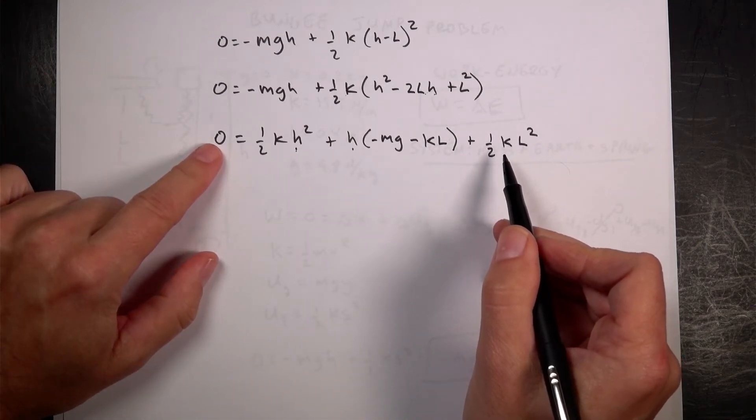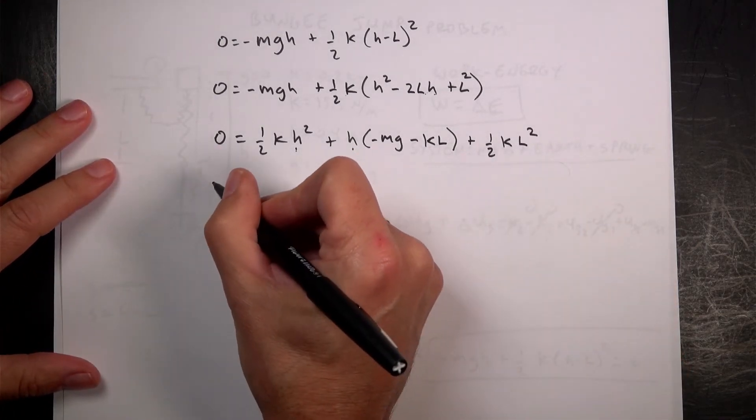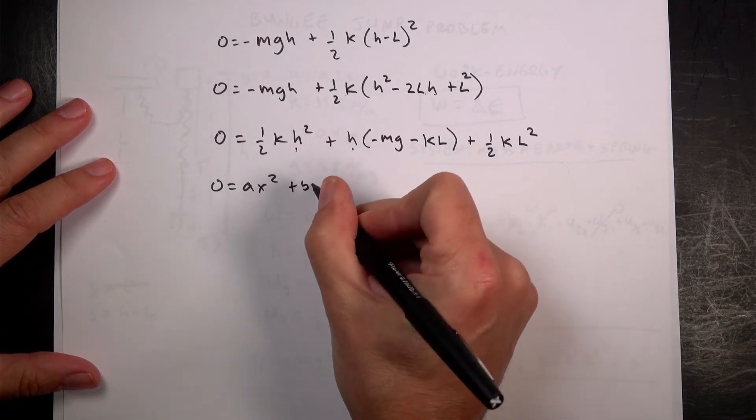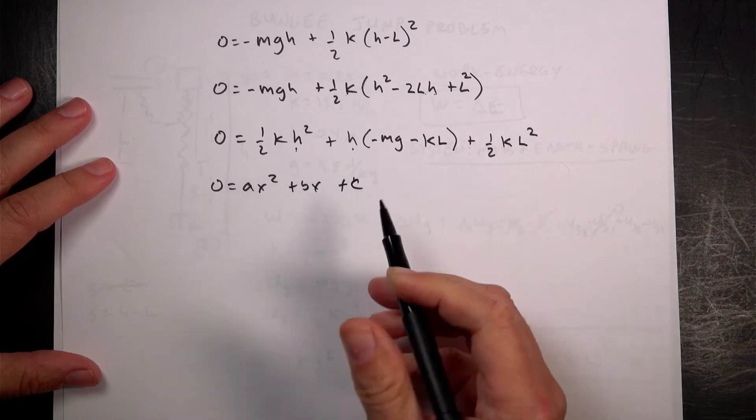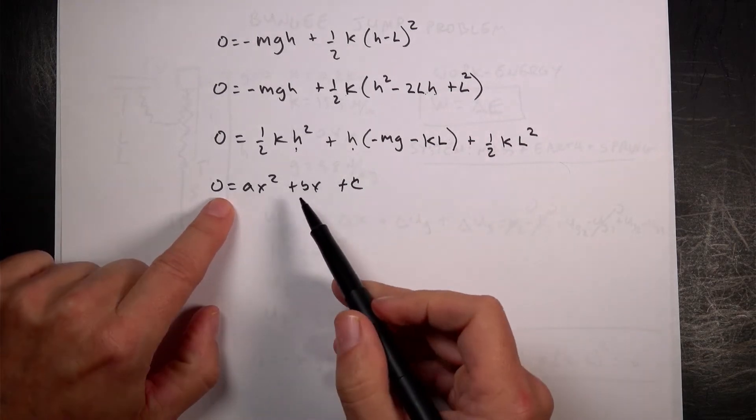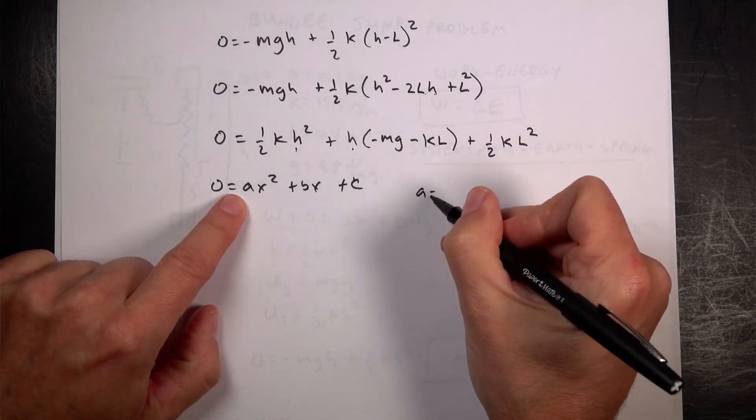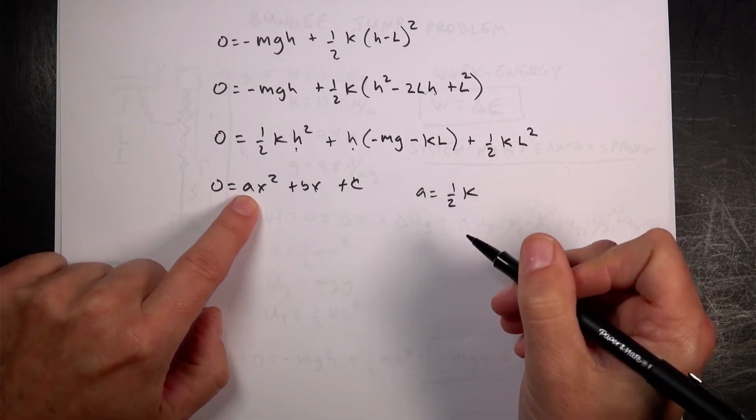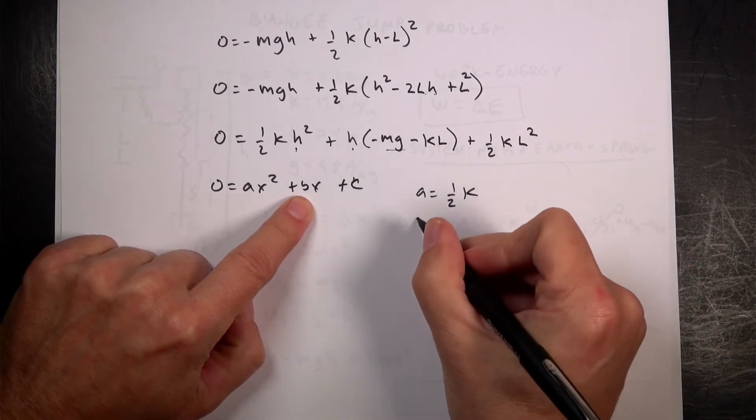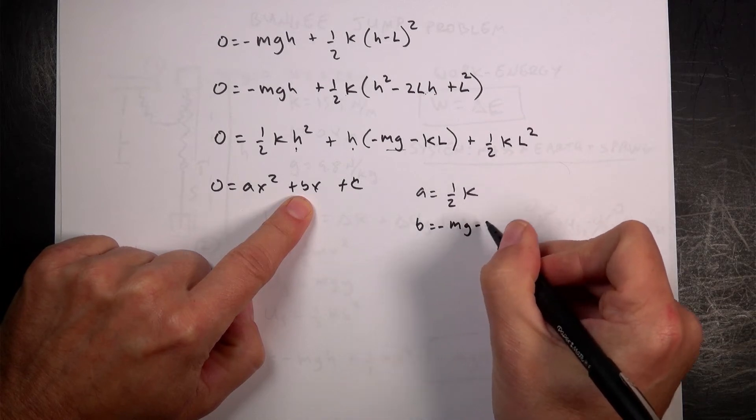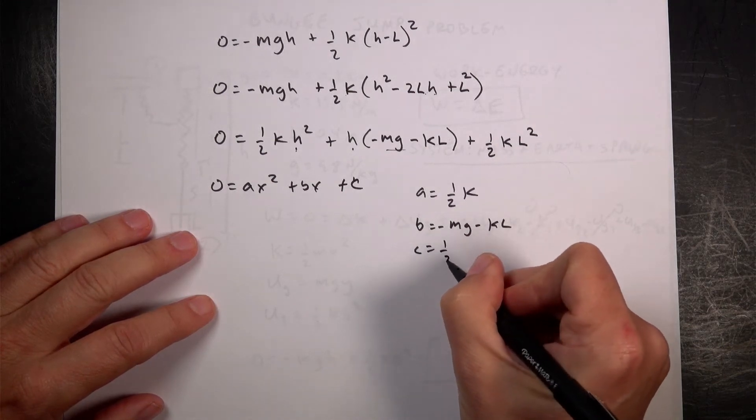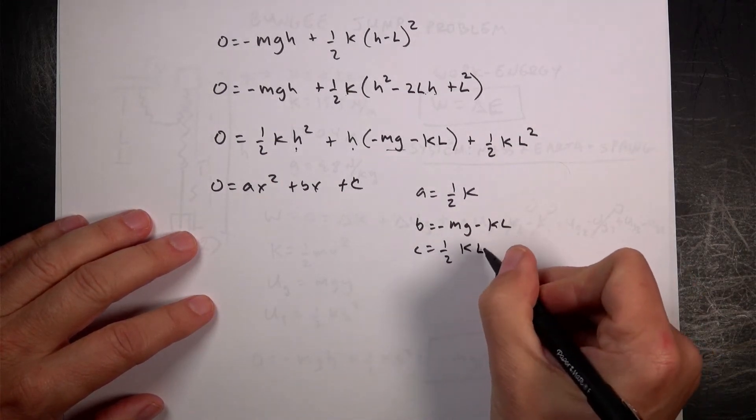So you'll see here I have an H term, H squared term, H, and a constant. All equals zero. This looks like the form zero equals AX squared plus BX plus C. But instead of X's I have H. And so here my A is going to be equal to one half K. My B is this term. B is negative MG minus KL. And my C is one half K L squared.